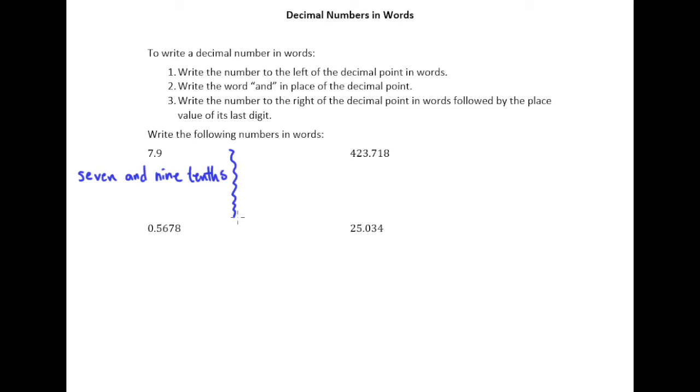Okay so let's follow this procedure for 423.718. So we would write out the number to the left of the decimal point. That's step one. So four hundred twenty-three.